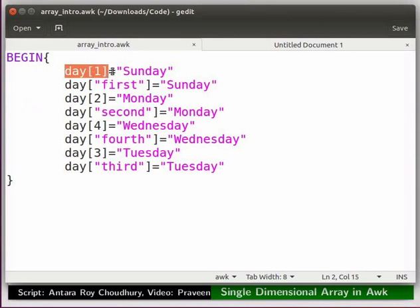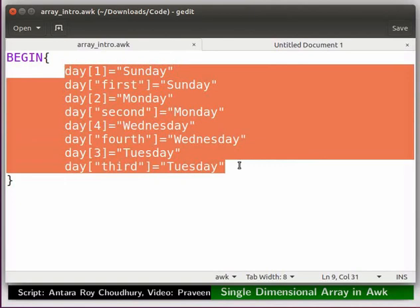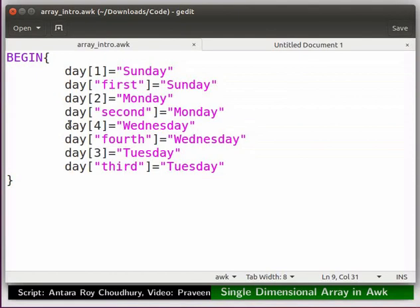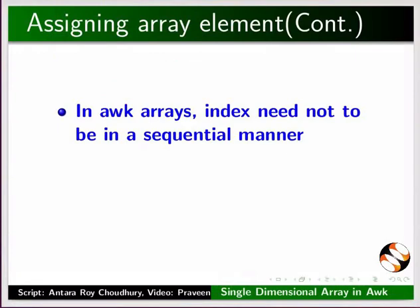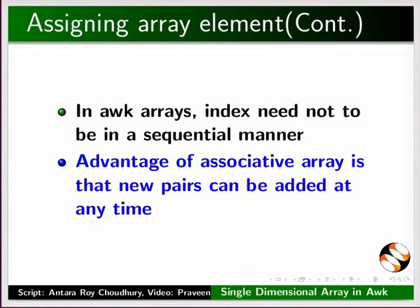Here, the name of the array is day. I have set the index as 1 and the value as Sunday. In this array element, I have used a string as the index. So for the index first, the value is Sunday. The entire array is constructed likewise. Notice here, the array elements are not in a sequence. I have declared day 4 before day 3. In awk arrays, the index need not be in a sequential manner.